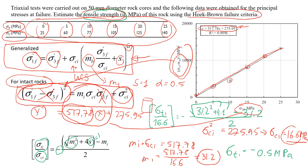So this is the answer to this question. I hope you've learned how to use the Hooke-Brown failure criteria for intact rocks. Have a nice day, and bye.